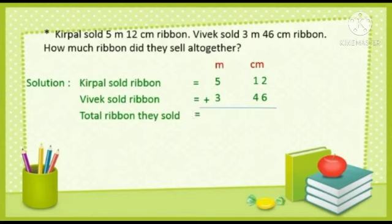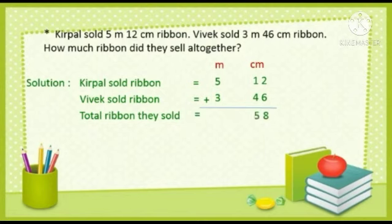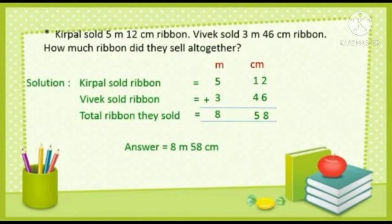We will start adding the digits from the right side. 2 plus 6 is equal to 8. 1 plus 4 is equal to 5. Now we move to the meter side. 5 plus 3 is equal to 8. So our answer is 8 meter 58 cm.